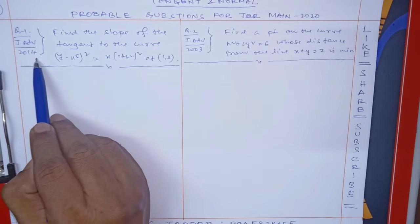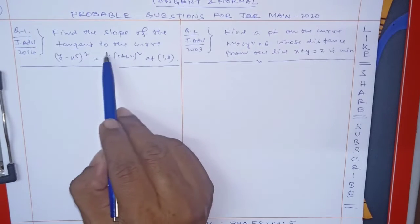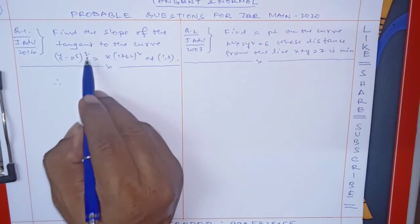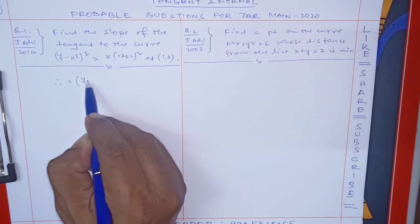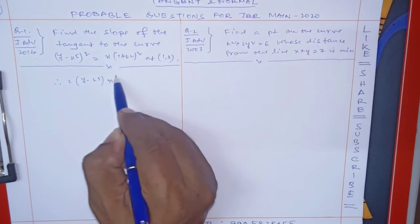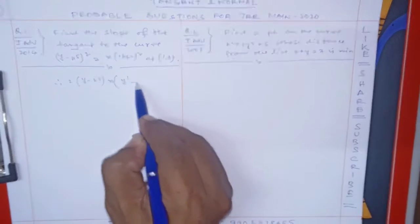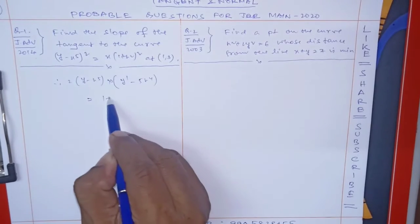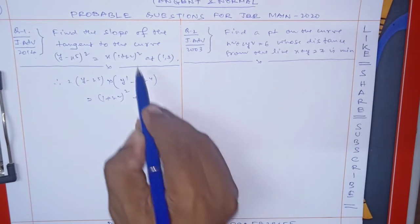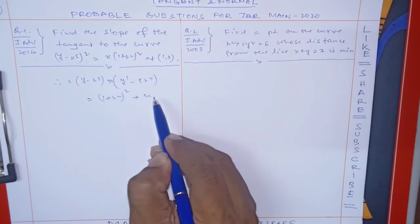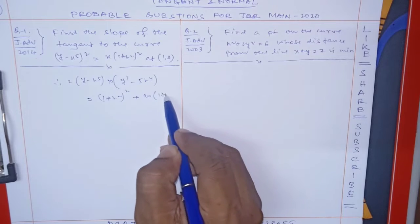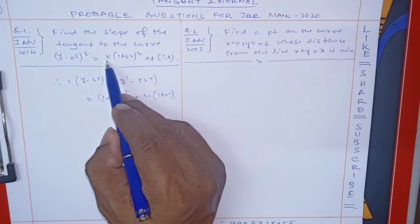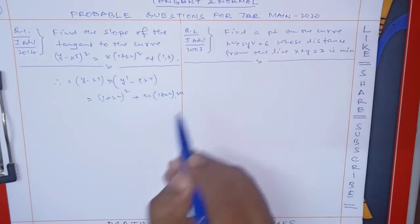The question from JEE Advanced 2014: find the slope of the tangent to the curve at the given point. To solve this, differentiate the equation. We get: 2y·y' minus x⁵·y' — the derivative of y is y dash, and the derivative of x⁵ is 5x⁴. That equals 1 plus x² whole square. This gives 2x into (1 + x²) into 2x.